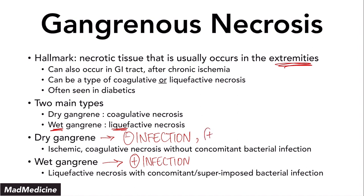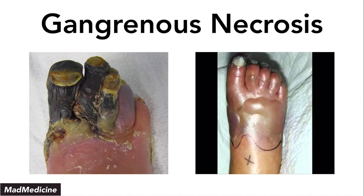Even though there's no infection in dry gangrene, you are going to have ischemia. In wet gangrene, you are not going to have ischemia — you'll see liquefactive necrosis occurring because of the infection. The infection is going to activate macrophages and neutrophils, causing those white blood cells to release enzymes to kill off the infected cells, and that leads to the liquefactive appearance of the tissue.